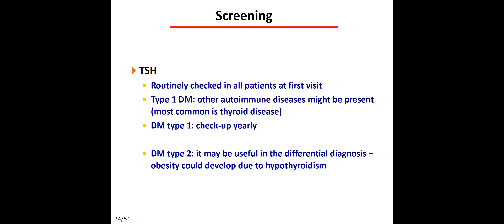TSH should be screened especially in type 1 diabetes because another common autoimmune disorder is Hashimoto's thyroiditis. If someone has one autoimmune disorder, they often develop additional ones, such as Addison's disease. TSH should be checked yearly to monitor thyroid function. In type 2 diabetes, TSH is useful for differentiating hypothyroidism, as hypothyroidism can also cause hyperglycemia.